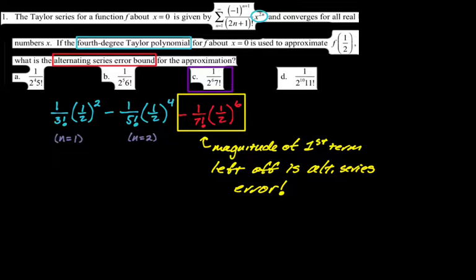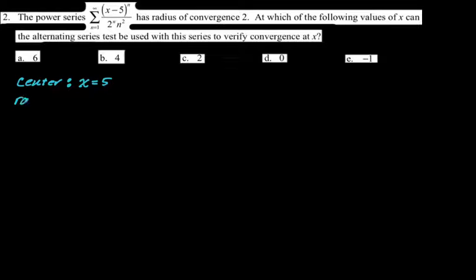Number two: the power series from 1 to infinity of (x minus 5) to the n over 2 to the n times n squared has a radius of convergence of 2. Which of the following values of x can the alternating series test be used to verify convergence? I need an alternating series and I need to be in the interval of convergence. The center is 5 — whatever makes x minus 5 equal zero — and the radius is 2.